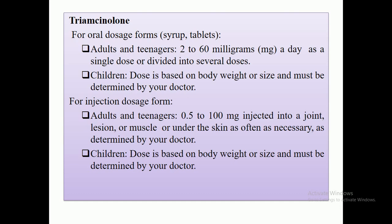For injection dosage forms, triamcinolone is also available in oral and injectable form. For adults and teenagers, the injectable dose is 0.5 to 100 mg injected into joint, lesion, or muscle under the skin as determined by the doctor. In my next lecture, I will discuss more about dose calculation and how to calculate doses for children. Through these formulas, you can find out the dose for all corticosteroids. Thank you so much for watching my lecture.